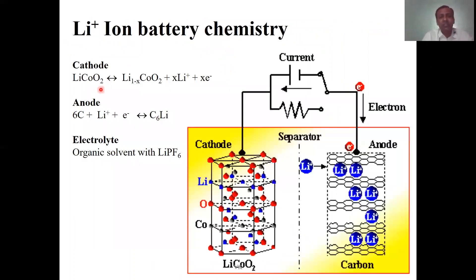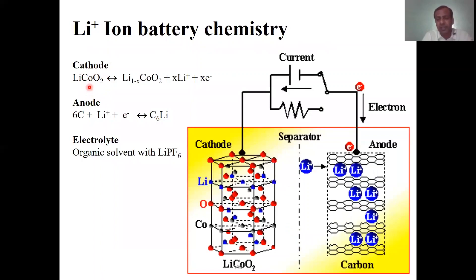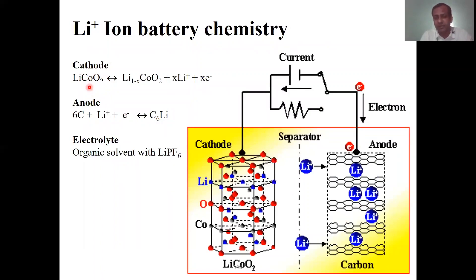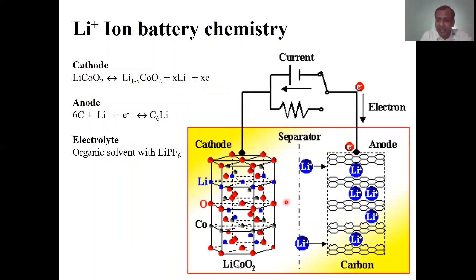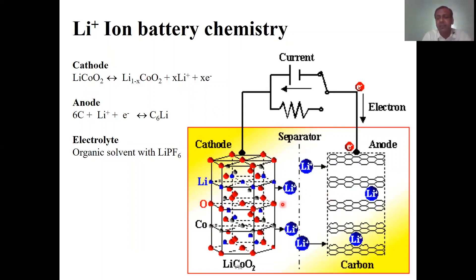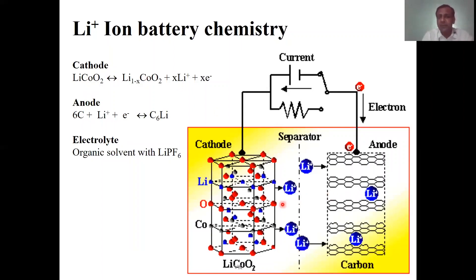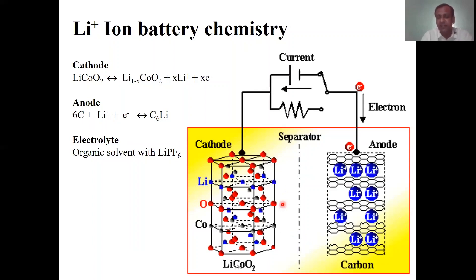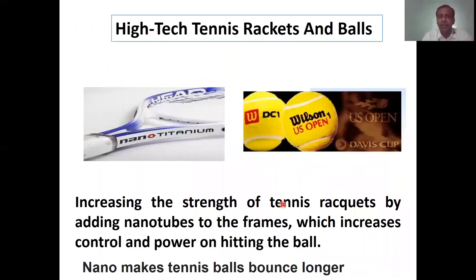One of the cathode materials in lithium-ion batteries is lithium cobaltate, and there are many other cathode materials available in the market. Intercalation and de-intercalation take place during the charging and discharging of lithium-ion batteries. This is illustrated in a schematic diagram.